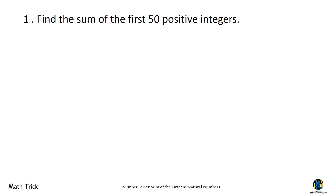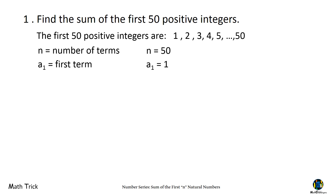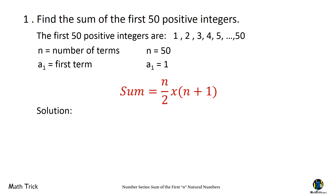Find the sum of the first 50 positive integers. The first 50 positive integers are 1, 2, 3, 4, 5, up to 50. N equals the number of terms; in this problem, N is 50. A-sub-1 is the first term; A-sub-1 is equal to 1. Take note that the number of terms is an even number, so we can find the sum by dividing N over 2, then multiplying the quotient by the sum of N plus 1. Let's substitute the value of N.